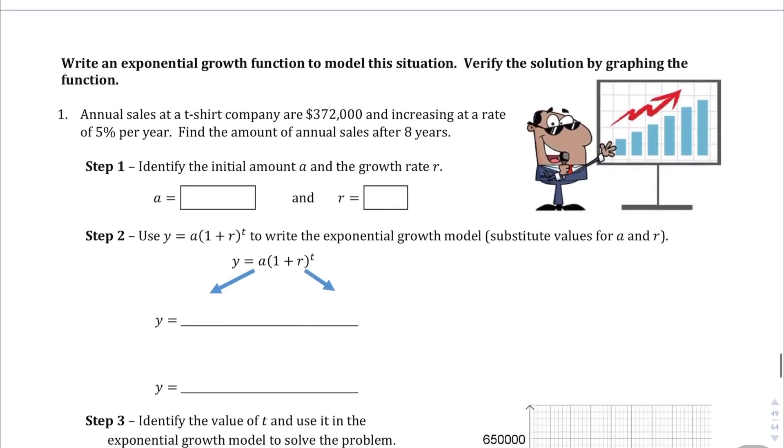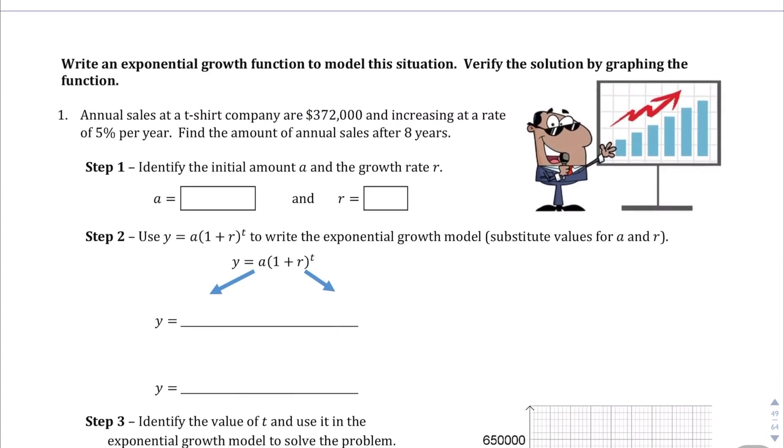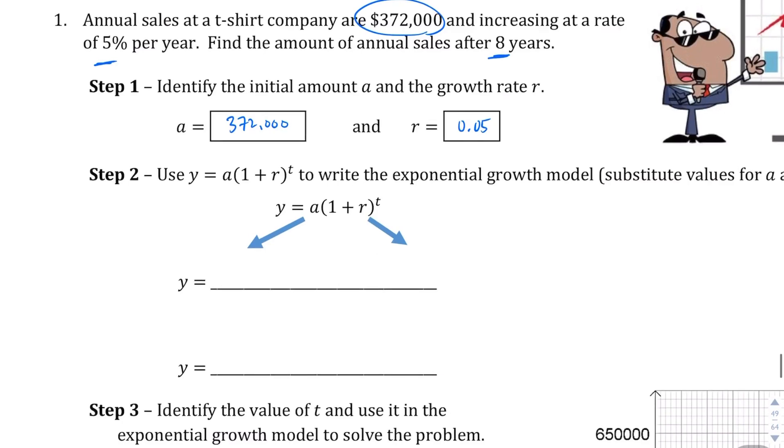So if we take a look at question number one, we have this context here. Annual sales at a t-shirt company are $372,000 and increasing at a rate of 5% per year. They want to know the amount of annual sales after eight years. So the initial value a is right here, $372,000, and the growth rate is 5%. And again, we can't just write 5, we have to write 5% as a decimal, which is 0.05.